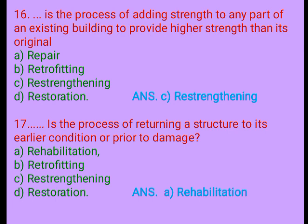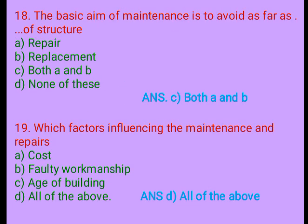Question 17. This is the process of returning a structure to its earlier condition or prior to damage. A. Rehabilitation, B. Retrofitting, C. Restrengthening, D. Restoration. Answer: A. Rehabilitation. Question 18. The basic aim of maintenance is to avoid: A. Repair of structure, B. Replacement, C. Both A and B, D. None of these. Answer: C. Both A and B.